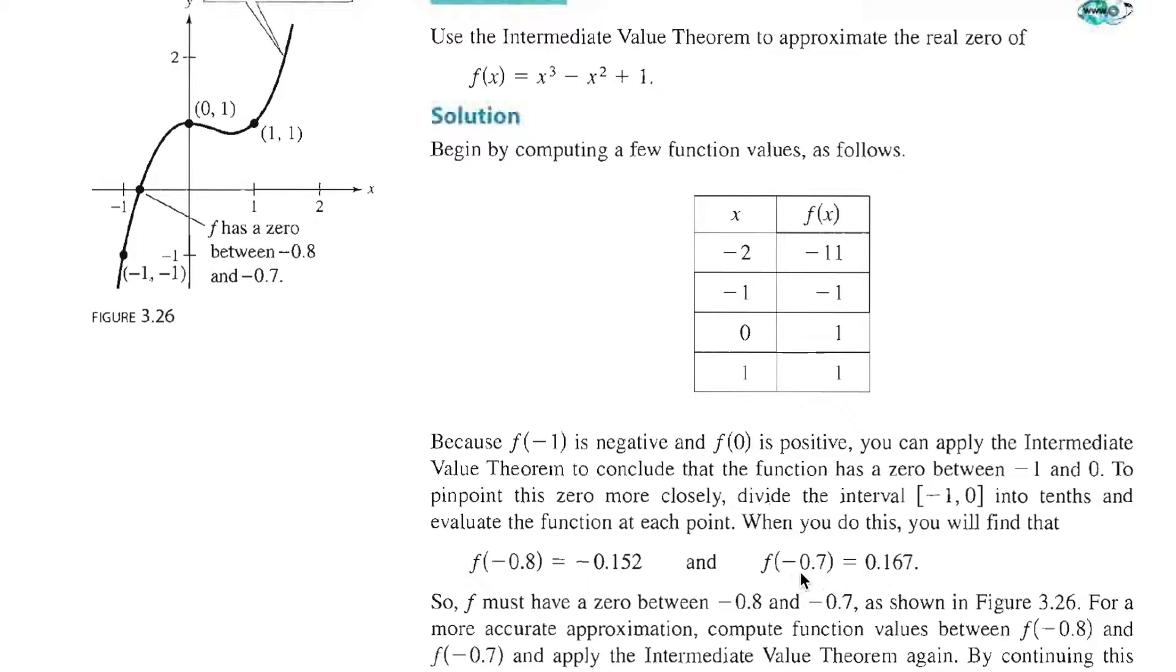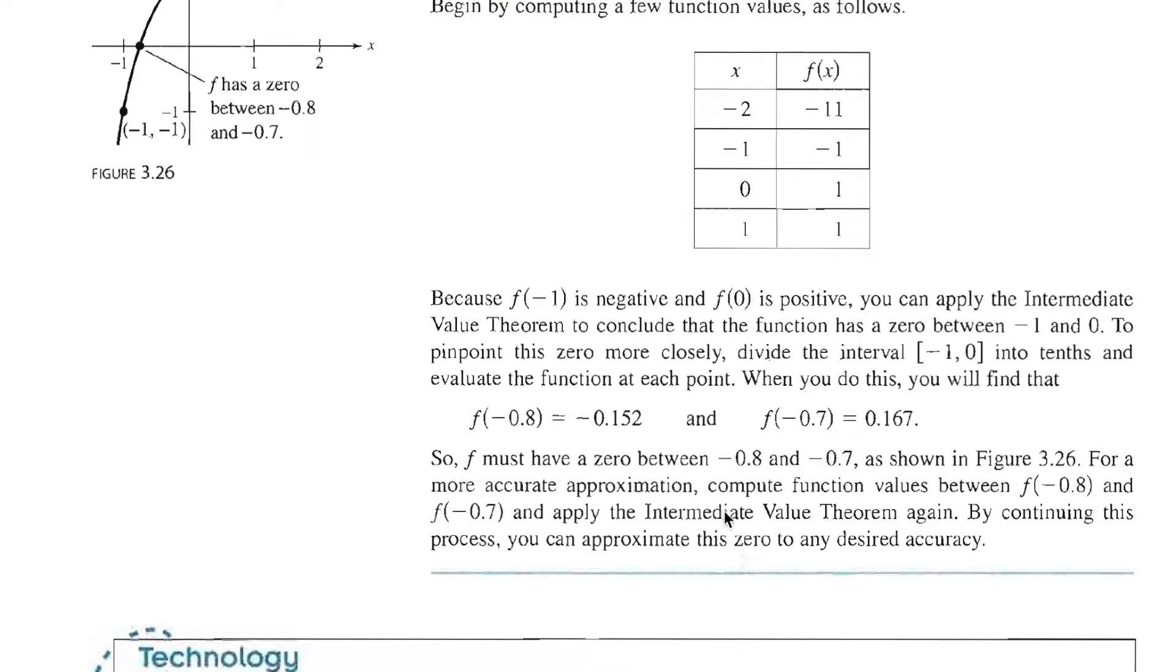Now we break that up into -0.71, -0.72, -0.73, and so on to -0.79. As we break that up, we can find a tenth. If you want to keep going, you can continue this process and approximate this zero to any desired accuracy.